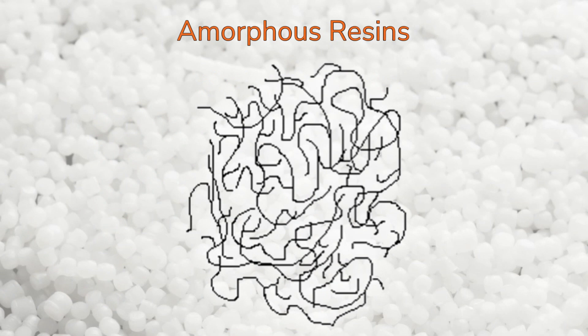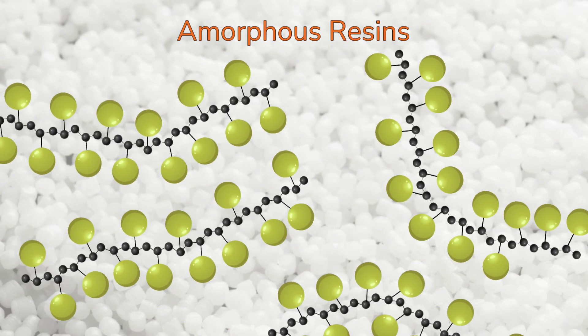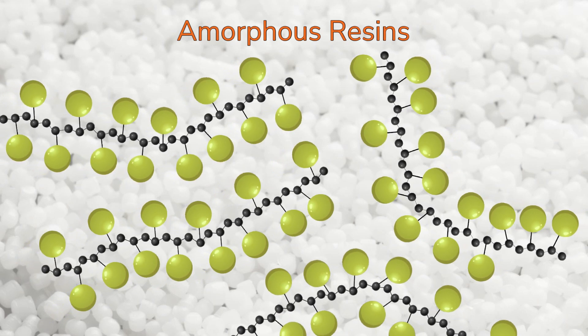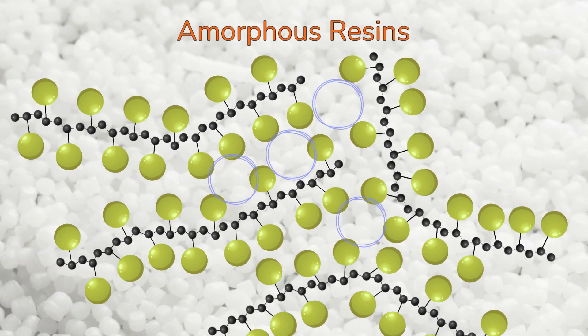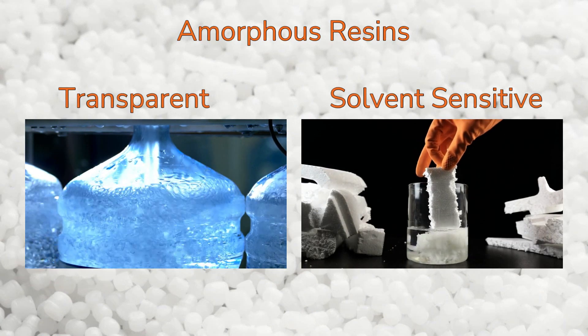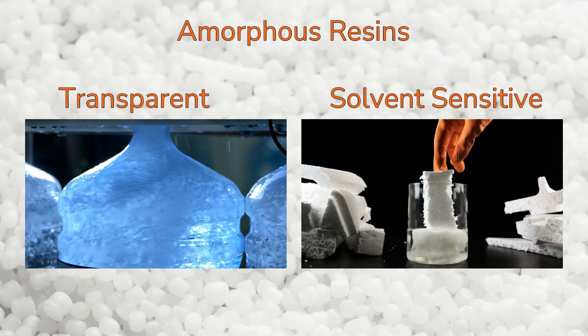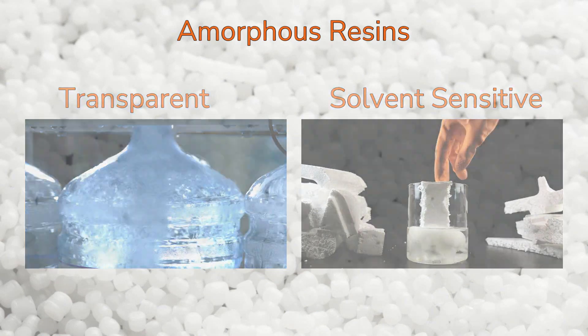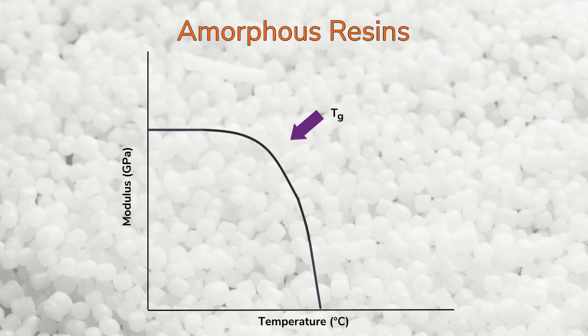Amorphous polymers are characterized by random entanglement of the individual polymer chains, and due to bulky side groups do not allow close packing of the chains. Large spaces between polymer chains allow light to pass through easily and for chemicals to penetrate. Because of this, amorphous resins tend to be transparent and solvent sensitive. Amorphous resins can be characterized by their glass transition temperature. They do not have a melting temperature and they soften over a broad temperature range.